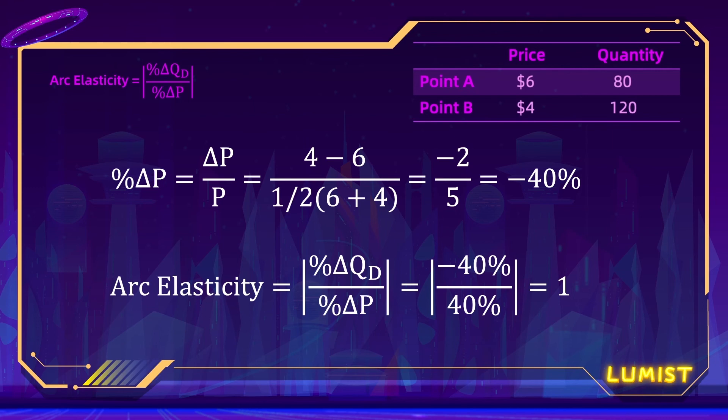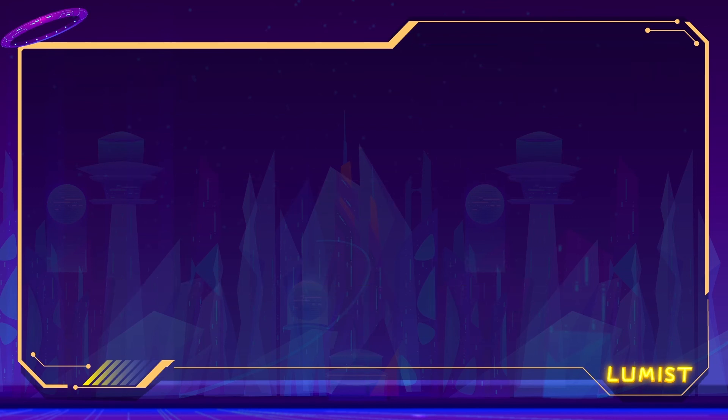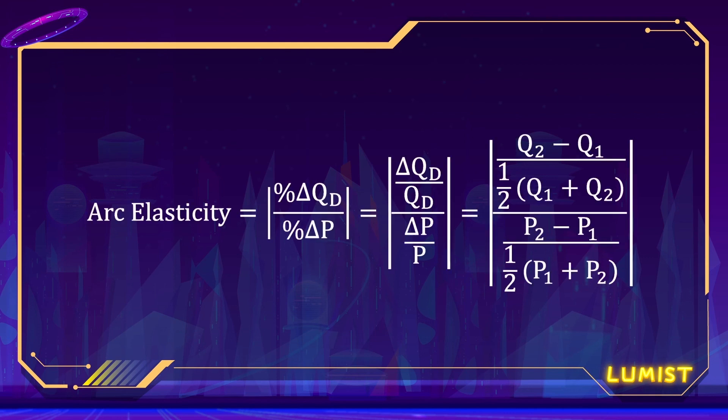So we determine that the arc elasticity between point A and point B is unit elastic. Now get ready to take a screenshot or take some notes, because here is our general formula for calculating arc elasticity. Remember, we use the average value of the prices and quantities when we calculate the percentage change — we call this method the midpoint method, because we're taking the average value.